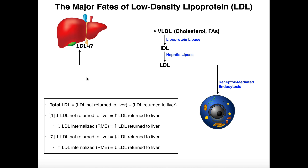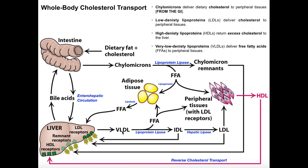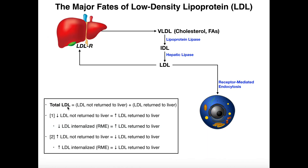There are two fates of low-density lipoprotein, and this plays a role in regulation of how much LDL the liver sends out. Our total LDL is the sum of the LDL not returned to the liver plus the LDL returned to the liver. The LDL not returned to the liver is the LDL that gets internalized and utilized by peripheral cells via receptor-mediated endocytosis. If it doesn't return to the liver in normal healthy individuals, it was utilized by cells. The liver will take up returned LDL and recycle whatever was in it.